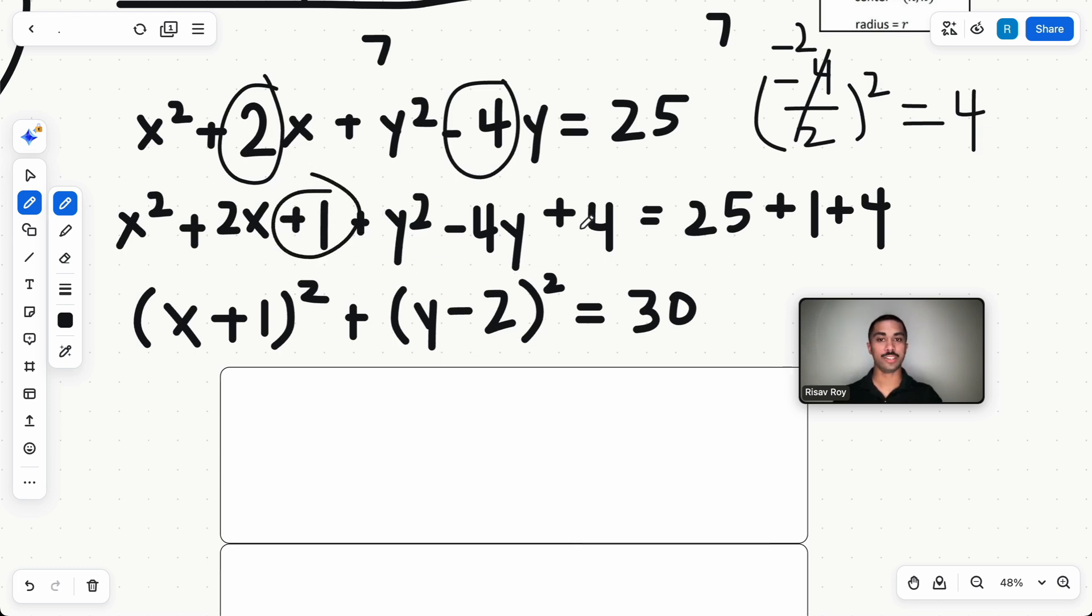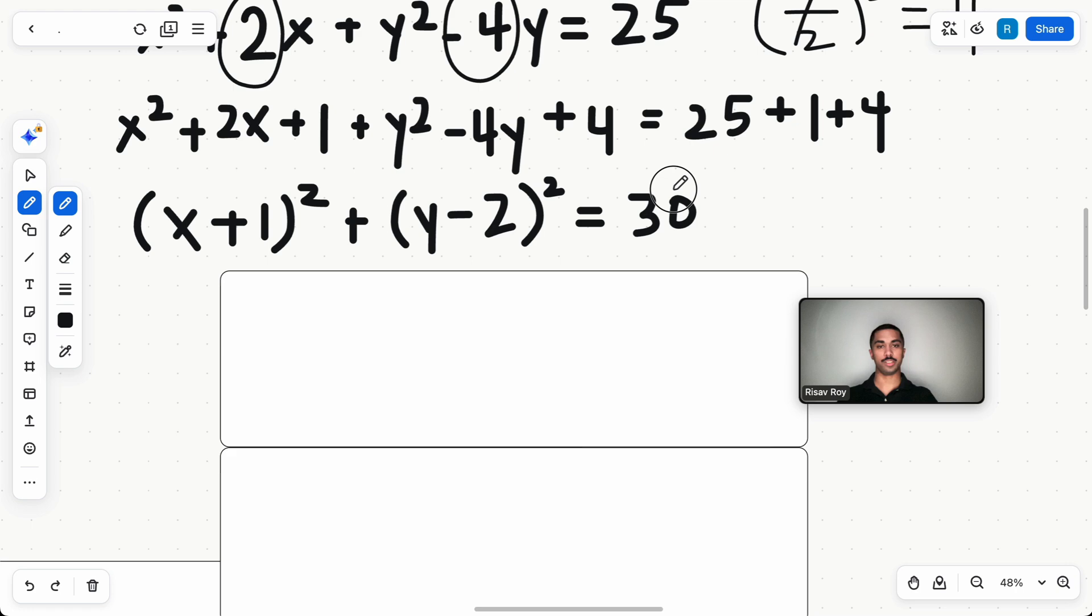And this, y² - 4y + 4, is also another perfect square, (y - 2)². We want to add these terms because when we take these b values, divide them by two, and square them, they give us the perfect amount to add to find these perfect squares. Now, since we added one and four to one side, we have to also do it on the other side. So 21 + 1 + 4 is 30.